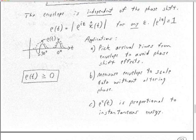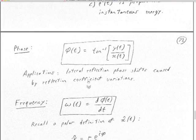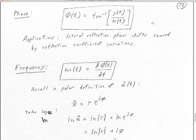The envelope squared is proportional to the instantaneous energy. There are physical calibration factors needed to get energy in joules, but it's certainly proportional. The envelope is always greater than or equal to zero. We can also get an instantaneous phase. Identifying reservoirs by interesting 90-degree phase wavelets has actually discovered a lot of oil. The phase is just the inverse tangent of y over x from the analytic signal.